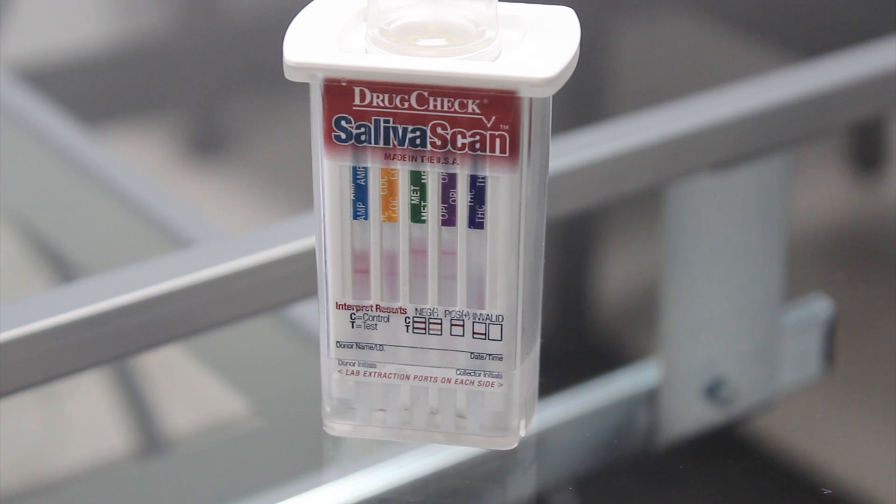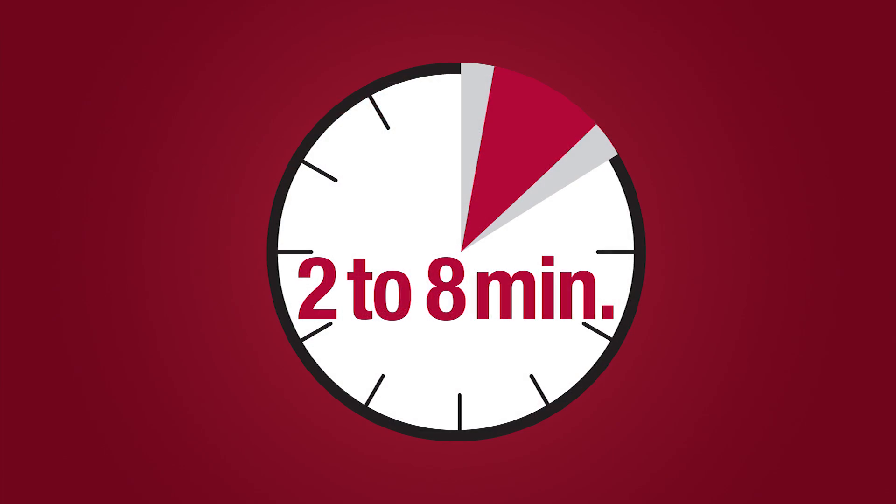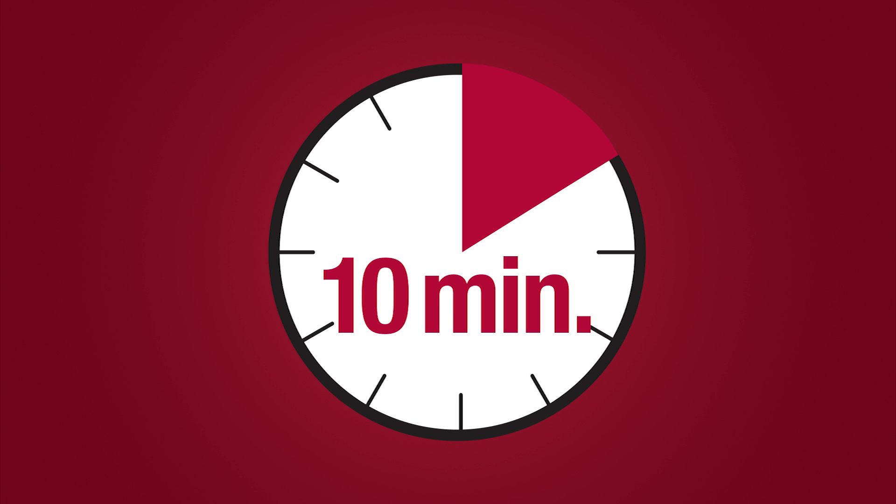Interpreting results. Once the CTRL line is visible, the test is ready to be interpreted. Typically, this occurs in 2 to 8 minutes. Read presumptive positive results at 10 minutes. Do not interpret results after 20 minutes.